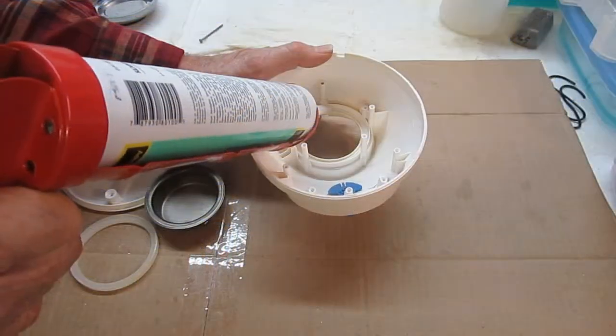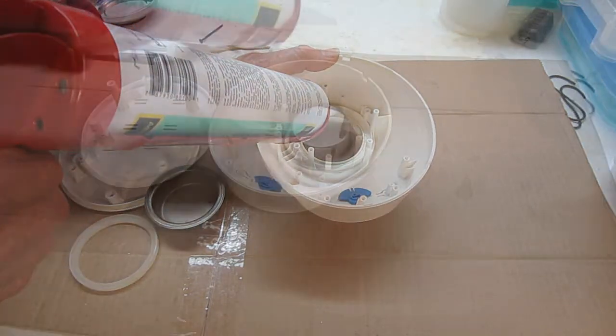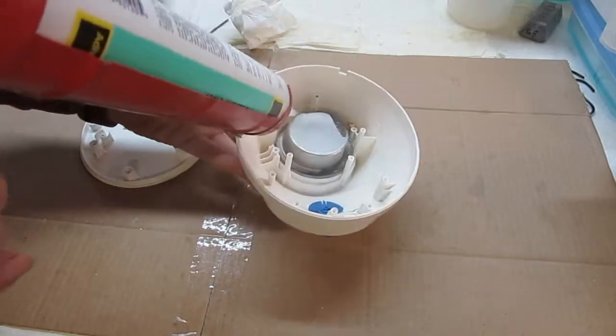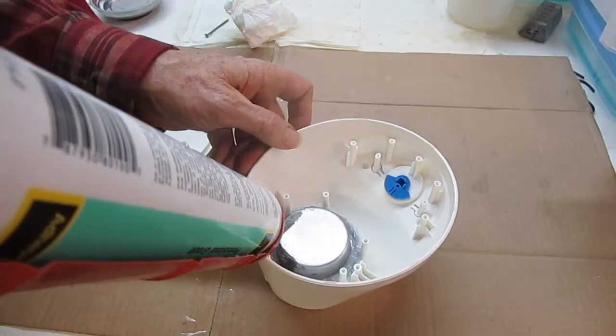Seal the metal dish with Neutral Cure Clear Silicone Adhesive Sealant. Please see my previous steamer update video for more details about sealing the unit.